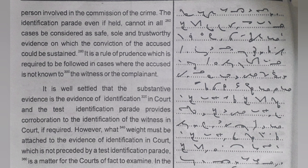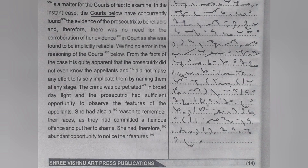The test identification parade provides corroboration to the identification of the witness in court if required. However, what weight must be attached to the evidence of identification in court which is not preceded by a test identification parade is a matter for the courts of fact to examine. In the instant case, the courts below have concurrently found the evidence of the prosecutor to be reliable and therefore there was no need for corroboration of her evidence in court, as she was found to be implicitly reliable. We find no error in the reasoning of the courts below.